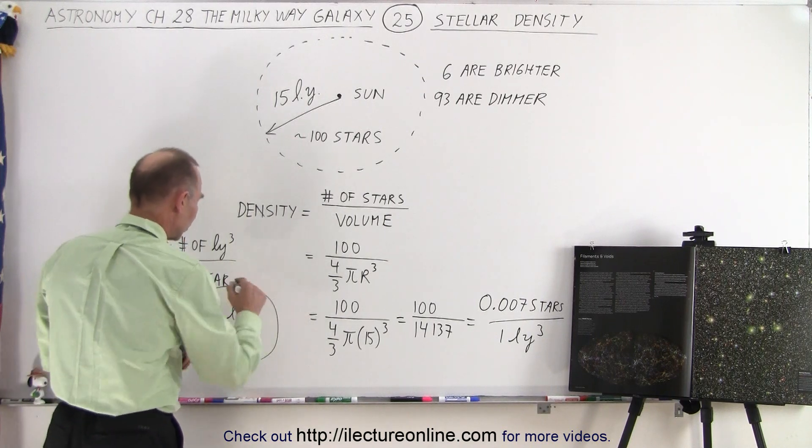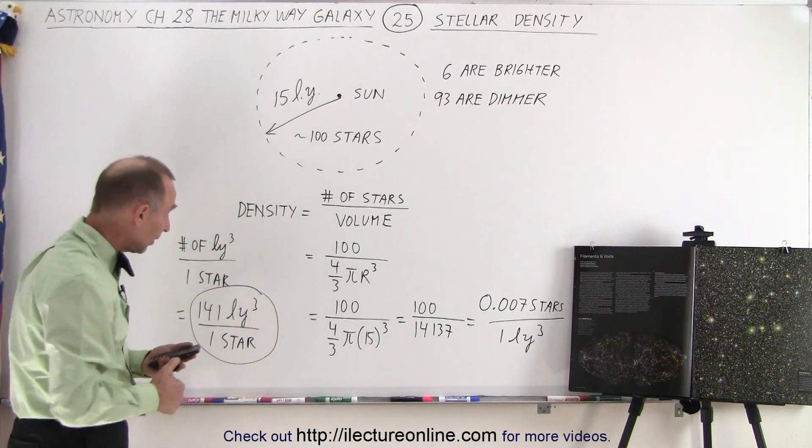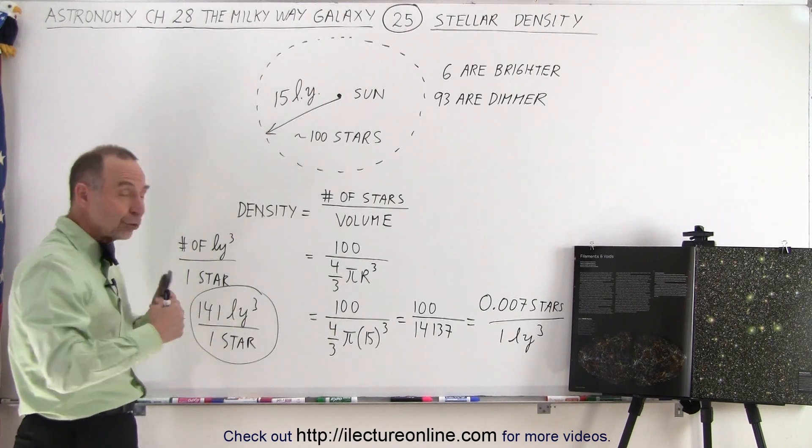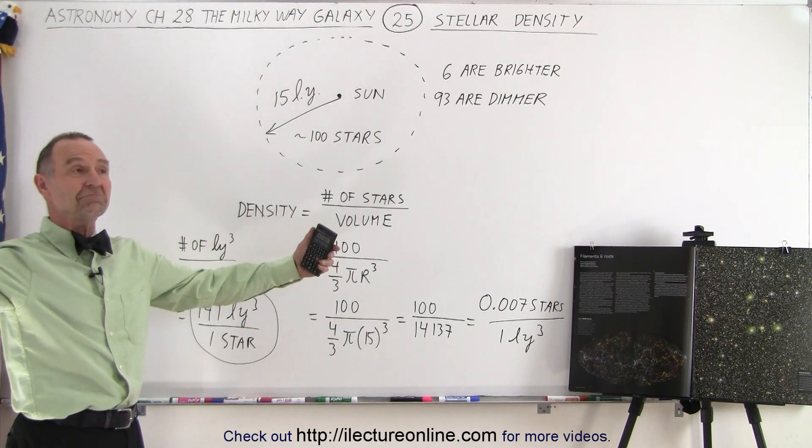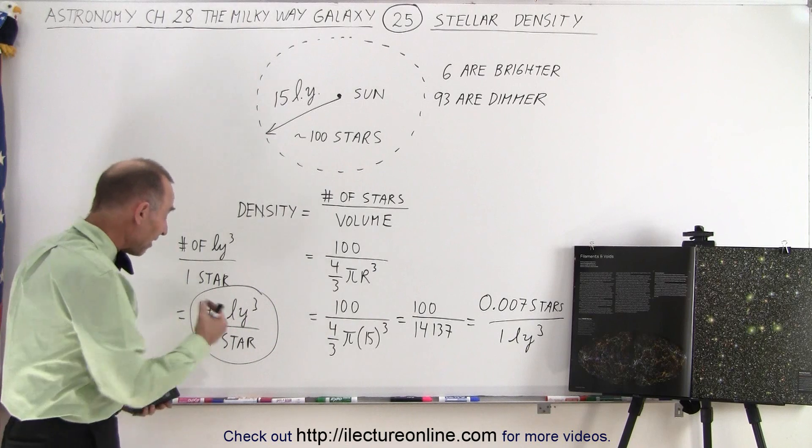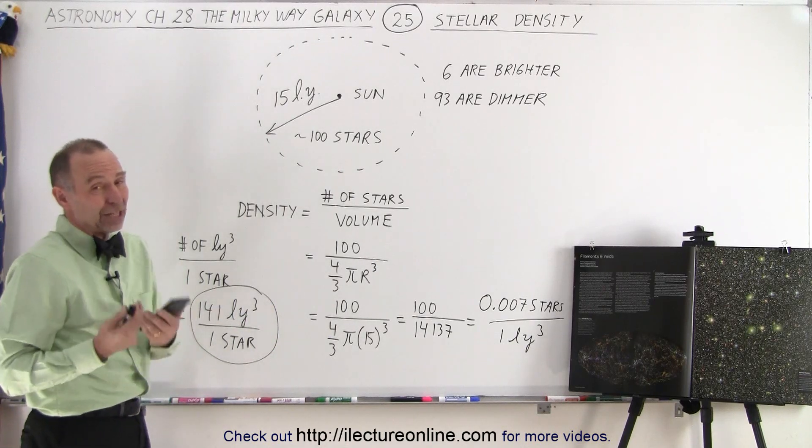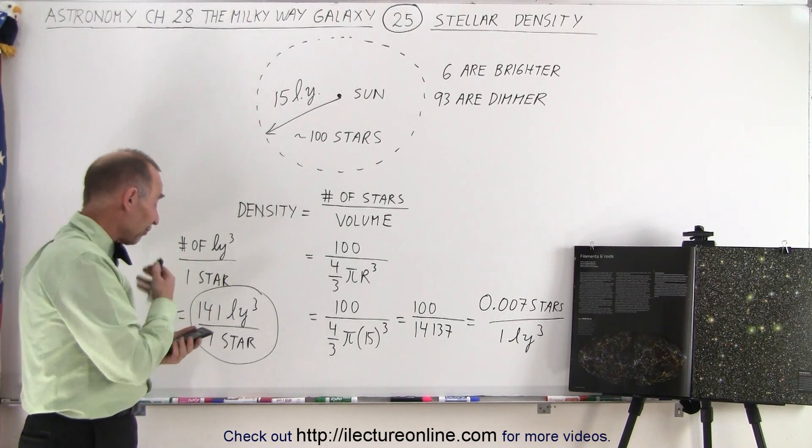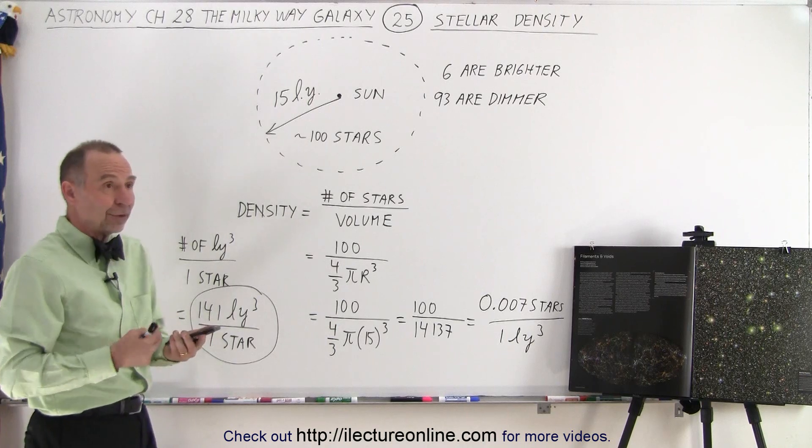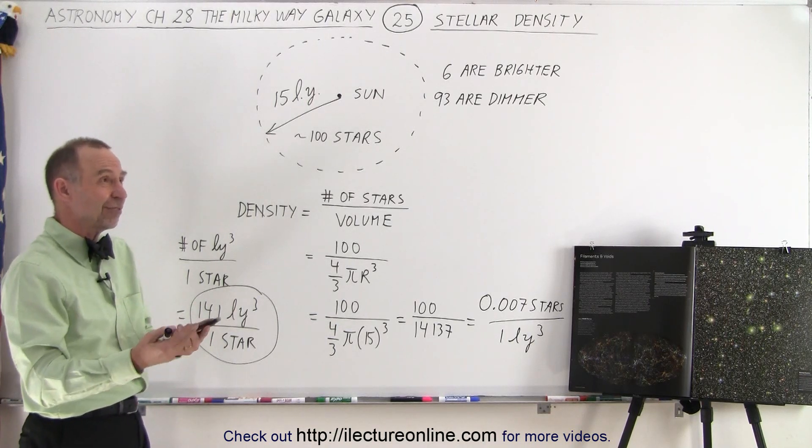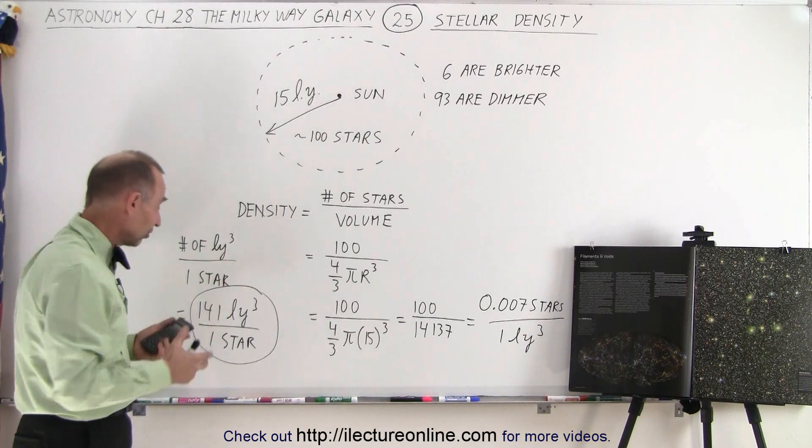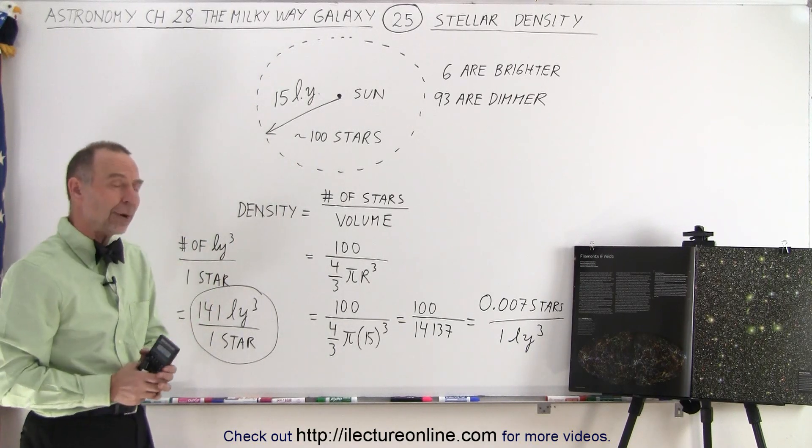So the density in our own neighborhood means that we have about 141 cubic light years of space, that's a lot of space, for every one star. Well, the nearest star to us is over four light years, so that makes sense, because four times four is 16, times four is 64, so just that kind of gives you the ballpark that that seems to be kind of correct.